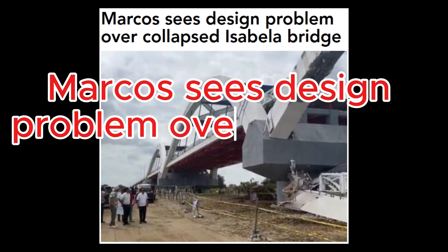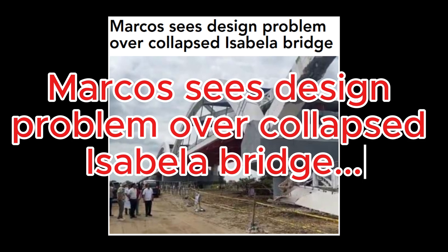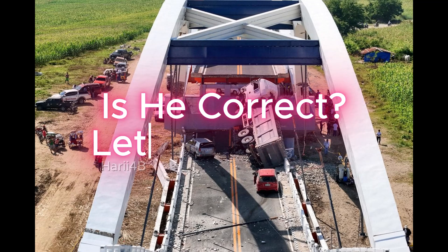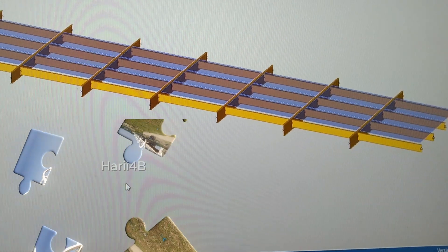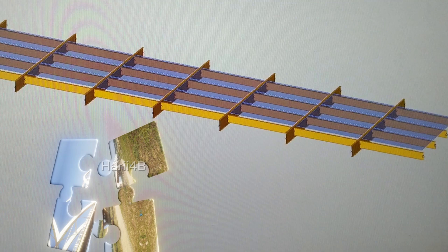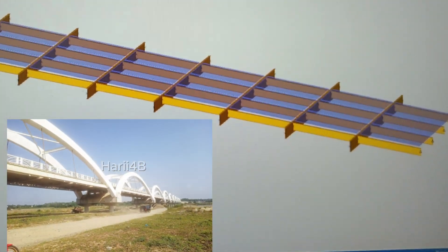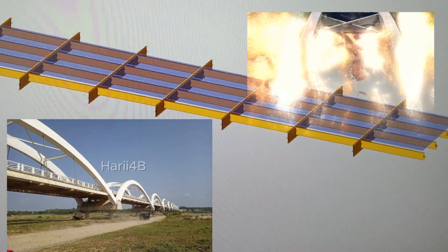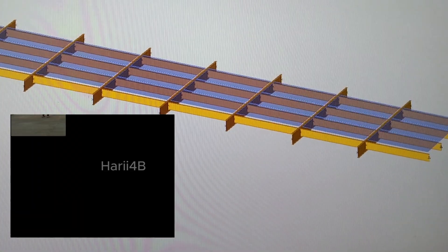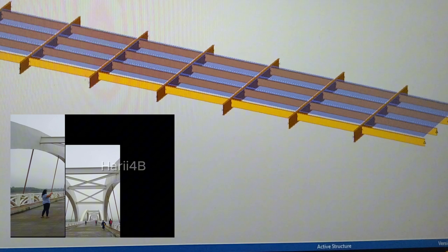Marco sees design problems over collapsed Isabella Bridge. Is he correct? Let's find out. Here is the Cabagan Bridge in Isabella, Philippines. Let's make a quick analysis of the causes of this failure.